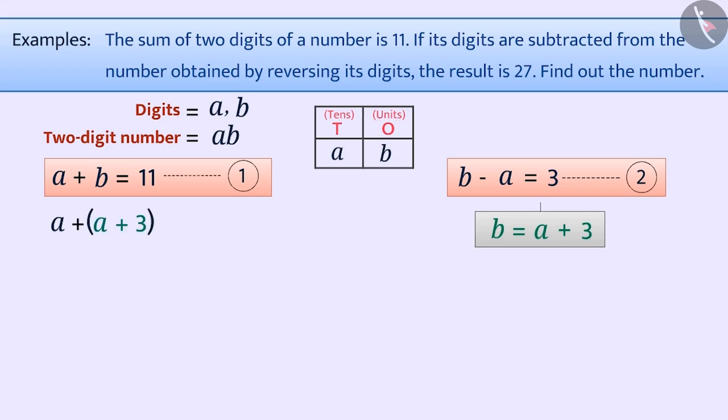This will give us A plus A plus 3 in brackets, which is equal to 11. That is, 2A plus 3 is equal to 11. That is, 2A is equal to 11 minus 3, which is equal to 8.